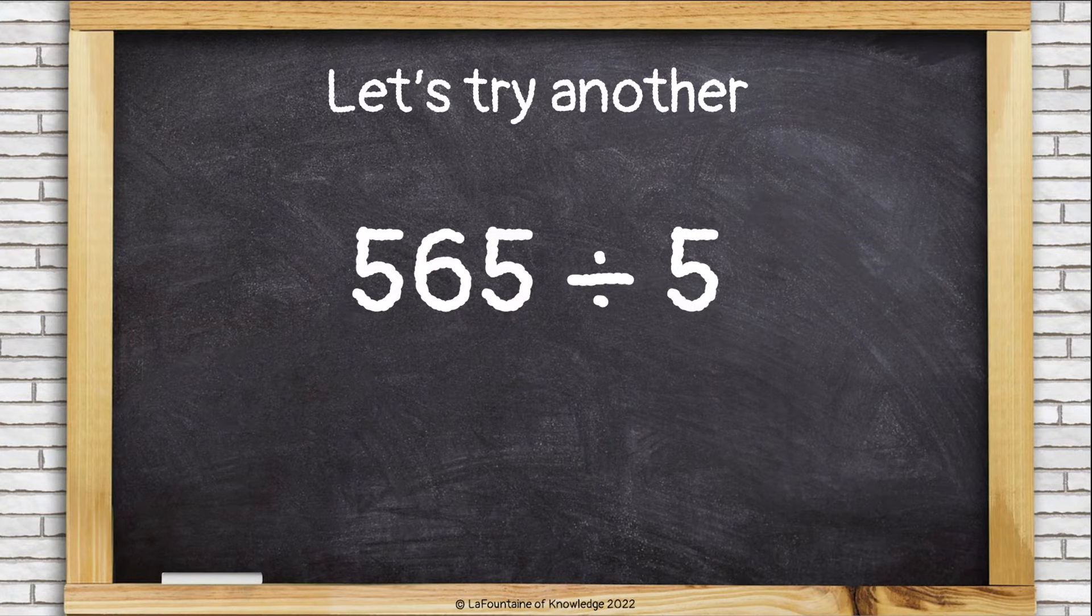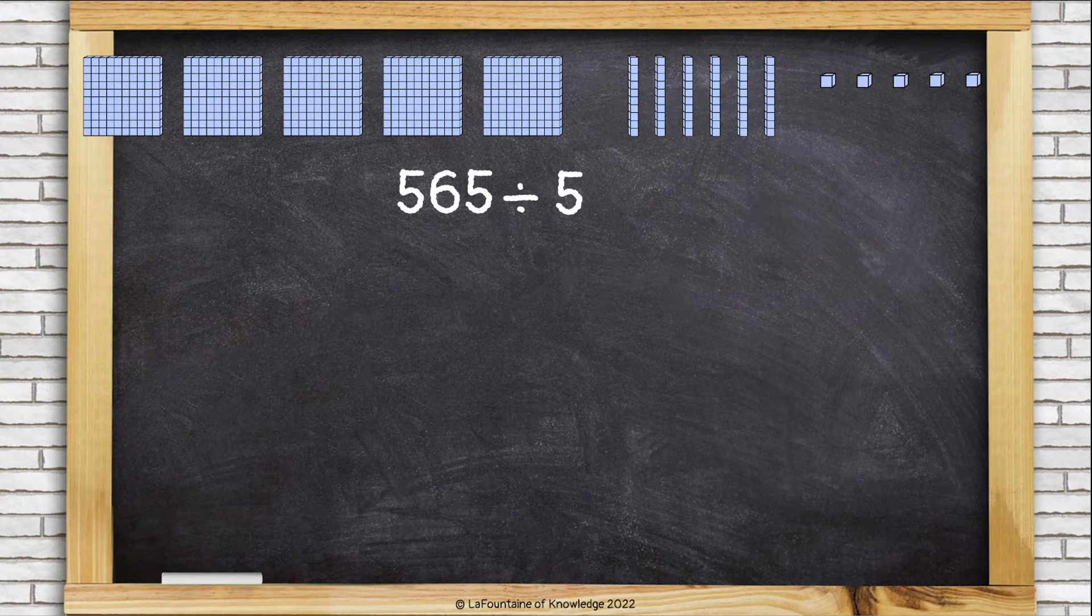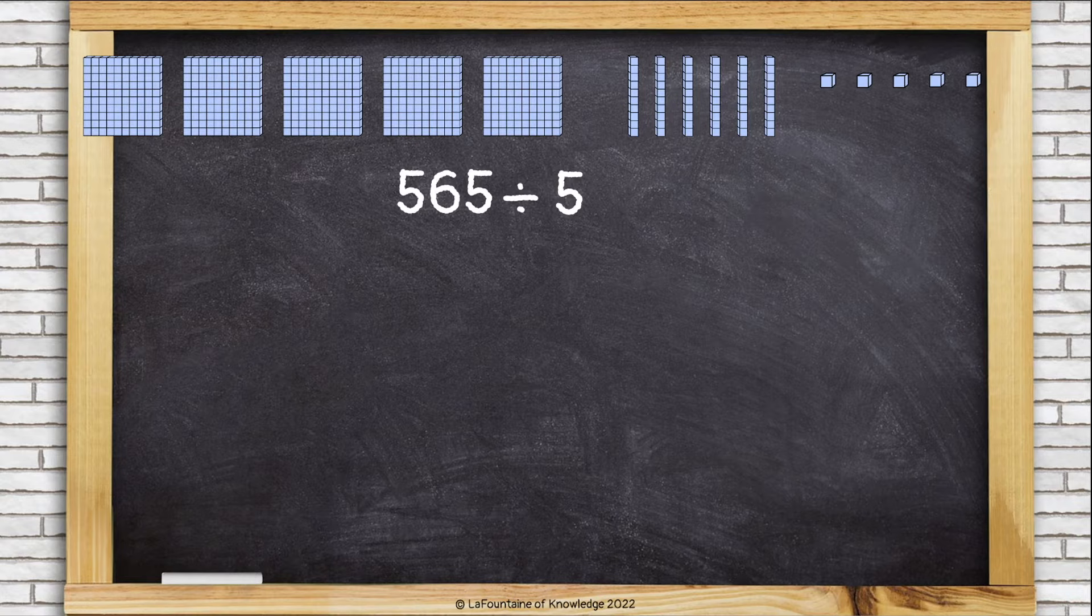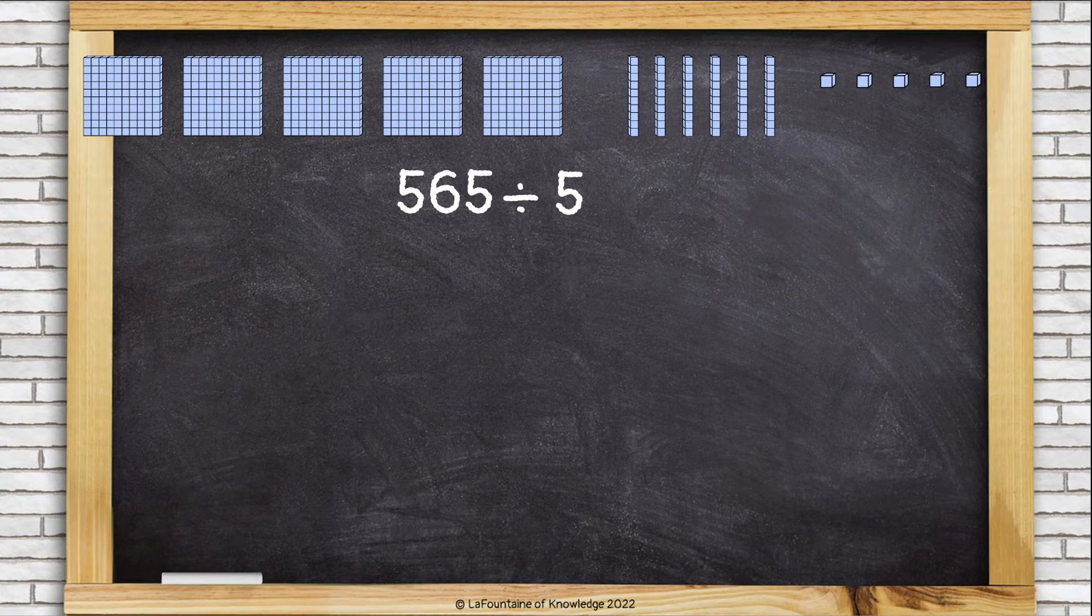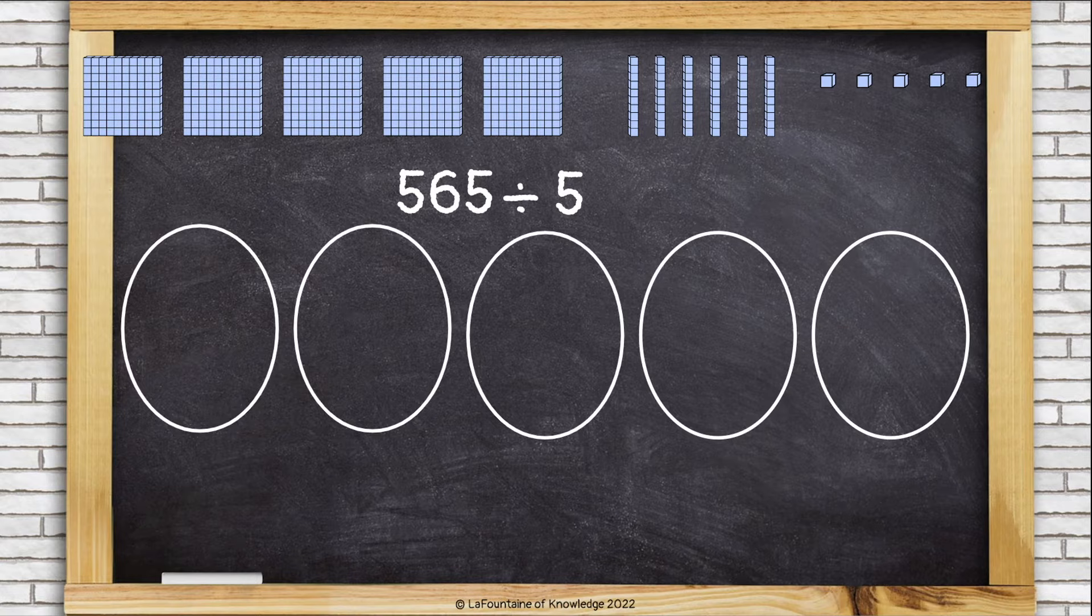Let's try another one, this time 565 divided by 5. So we'll start with 565, that's 5 hundreds, 6 tens, and 5 ones. And we'll need 5 groups. Now let's start dividing.